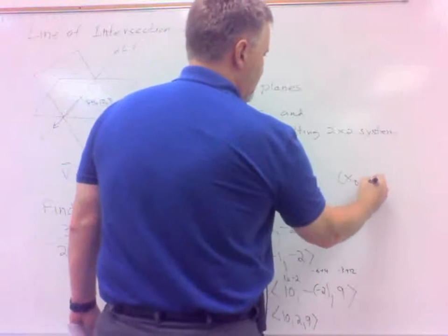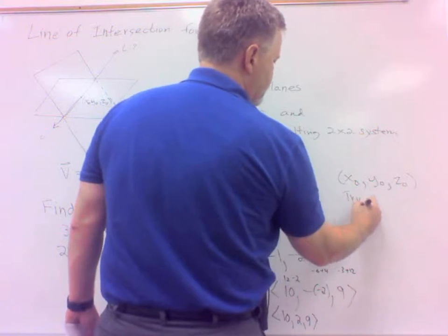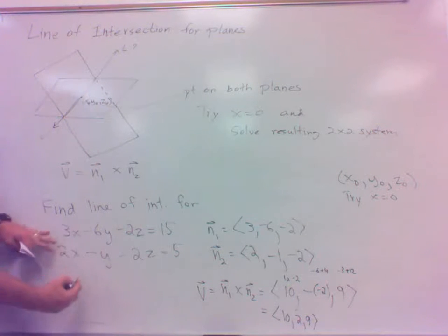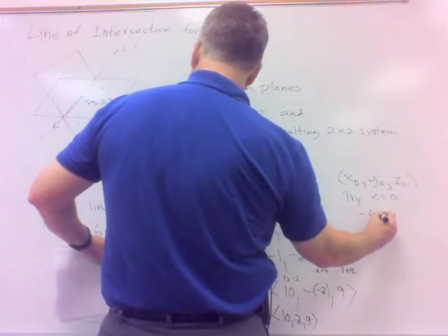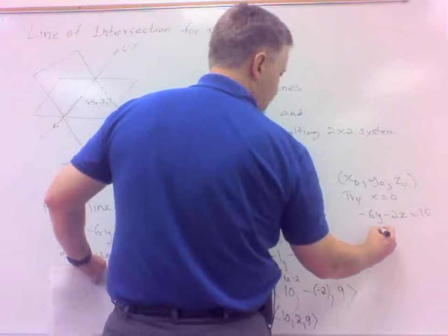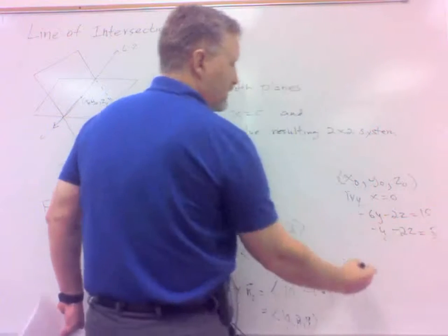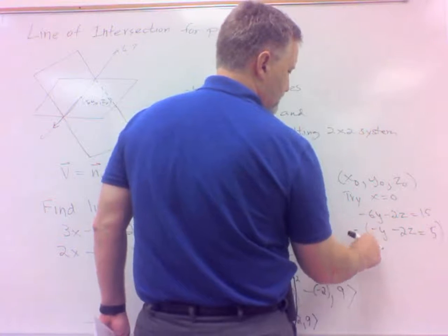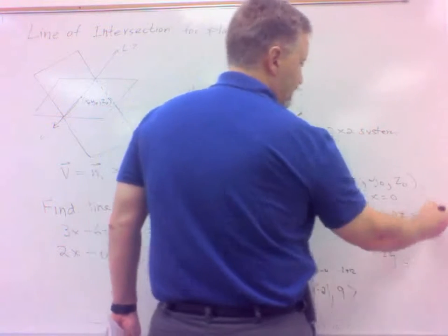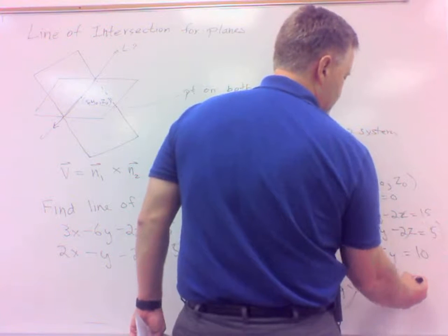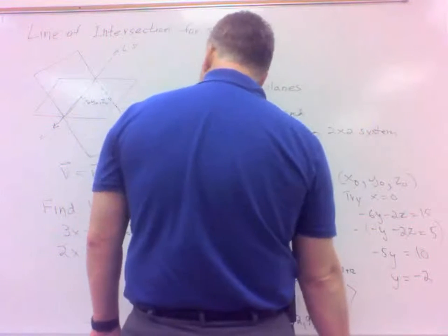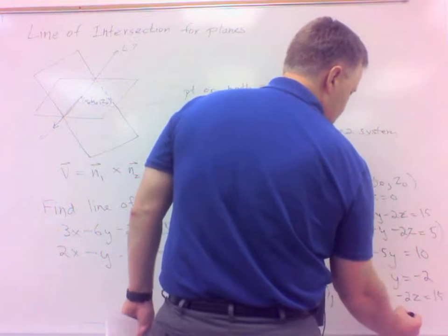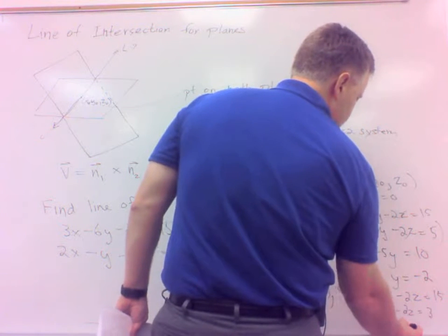Now for the point, the x0, y0, z0. I said try x equals 0. If it doesn't work, try x equals 1 or something else. Alright, so if we let x equal 0, that takes those out, and we'll have minus 6y minus 2z equals 15, and minus y minus 2z equals 5. And that's easy enough to solve. That would be to subtract, change those to the opposite sign, so that'd be negative 6y plus y would be negative 5y. Those would go out, and then 15 minus 5 would be 10, so y would be negative 2. Which means what's the z? Well, if y is negative 2, that would be positive 12 minus 2z equals 15, so that would be negative 2z equals 3, so z equals negative 3 halves.